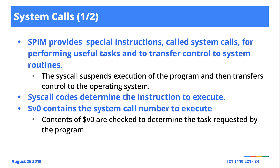You specify the system call code by loading that particular value — which is an integer — into the register v0. v0 is one of the 32 general purpose registers. Once you do that, depending on the type of service, there are probably a couple of intermediate steps to perform. But as the last step, you issue the instruction syscall — short for system call. Behind the scenes, every time the assembler sees the instruction syscall, it expects to find the value in register v0. Once it checks v0, it may or may not expect you to have specified intermediate steps between loading the value into v0 and issuing the syscall.